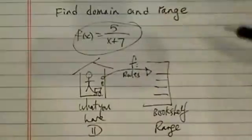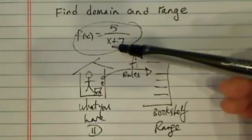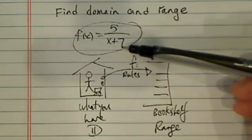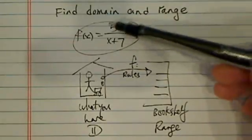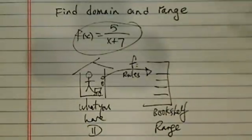So let's take a look at our function over here. The rule says give me any x, I'm going to add 7, put it on the denominator, and then divide 5 with it. That's how we're going to put it on the bookshelf here.